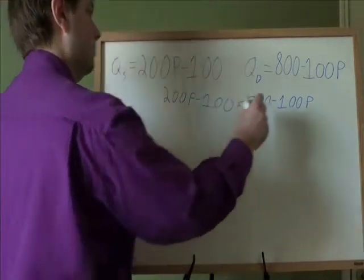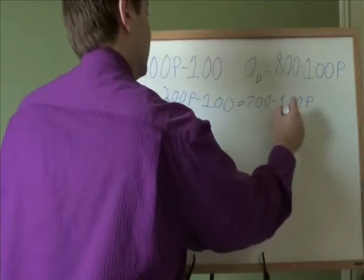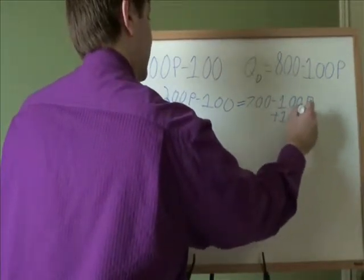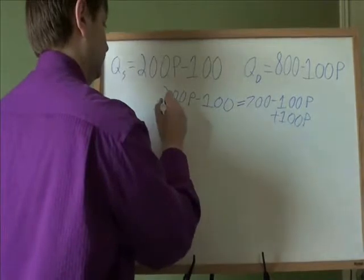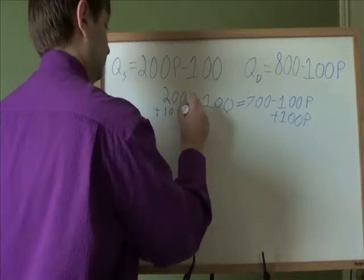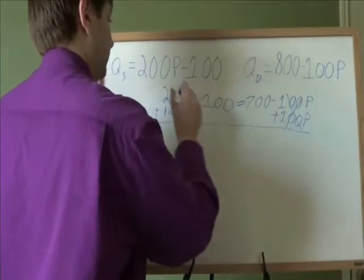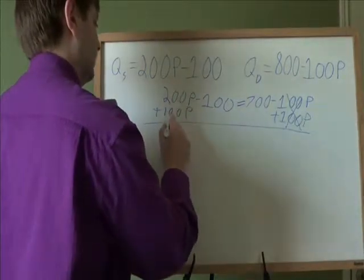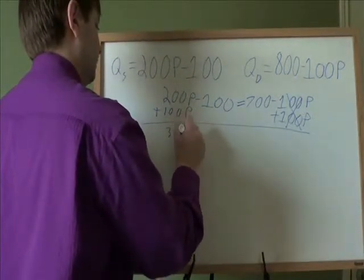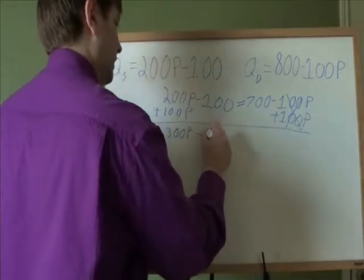So first step, same as usual. We're going to get all of the p's on the same side. So there the p's cancel out. Here 200p plus 100p is 300p. The rest stays the same.